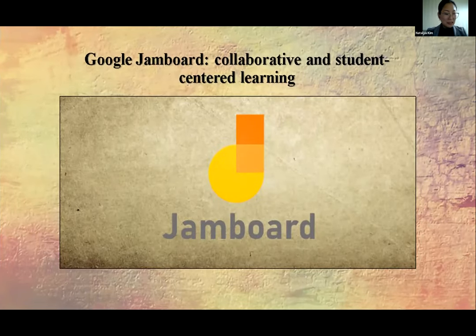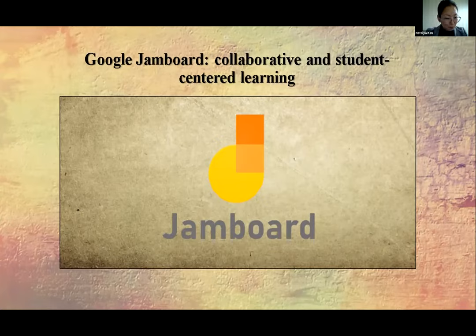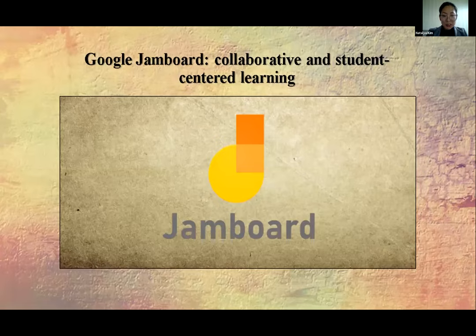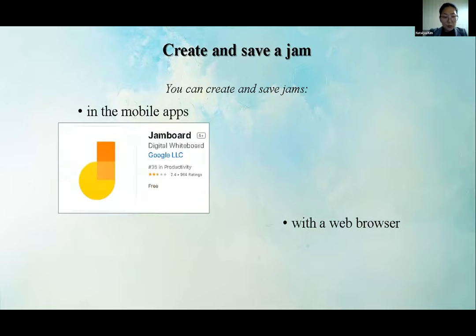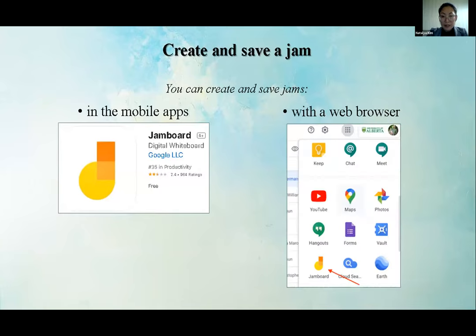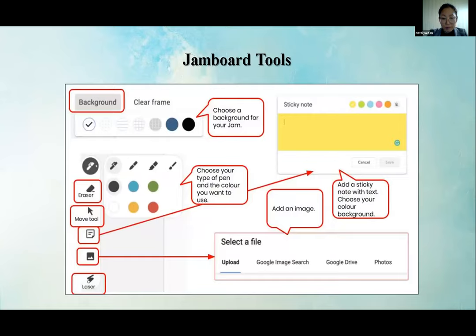Google Jamboard is a digital whiteboard that allows for remote and in-person collaboration on a shared space. Students or colleagues can sketch out ideas, problem solve, or draw collaboratively and synchronously. Once you have a Google account, you can access Google Jamboard in a browser or via mobile applications that work on tablets and smartphones. You can create and save jams directly. The Jamboard tools are really useful and handy, offering a variety of features that collaborators can use for a variety of classroom purposes.